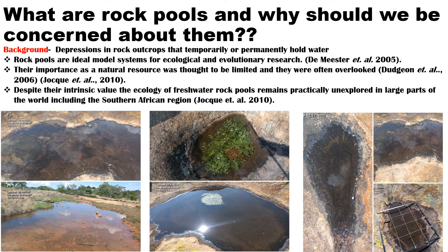So what are these rock pools really and why are we concerned about them? Rock pools are depressions that you'll find in rock outcrops that temporarily or permanently hold water. In particular, we're concerned about the ones that you find on great granite rock outcrops. Their importance is that they are good model systems for ecological research. They are small and therefore can be studied as a whole, and also because of their ephemerality you can study the effects of having a limited resource — in this case, water — which can be applied in climate change studies and resource studies.